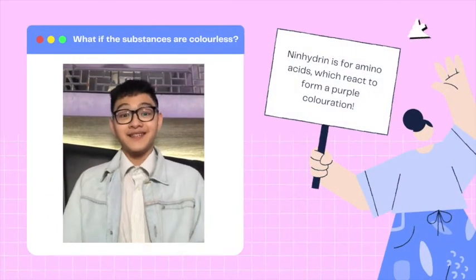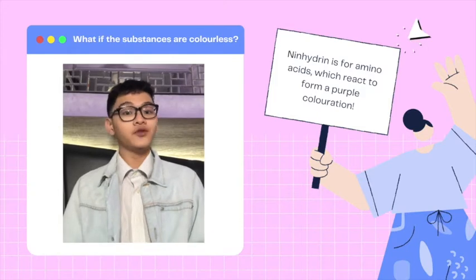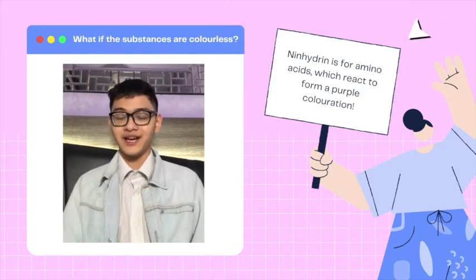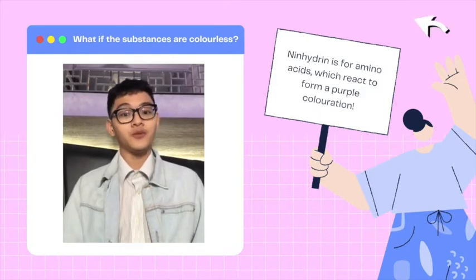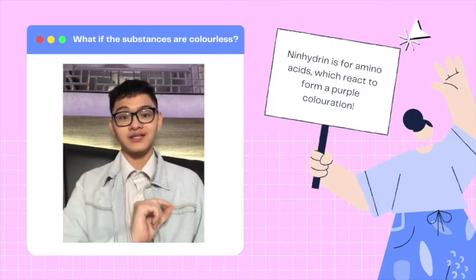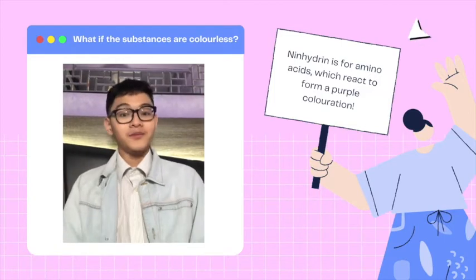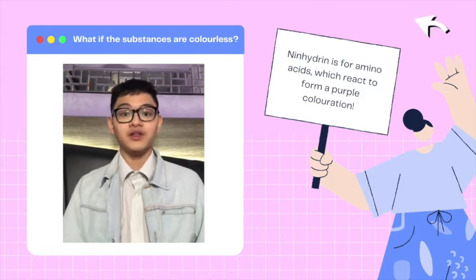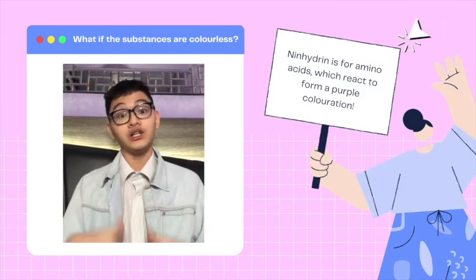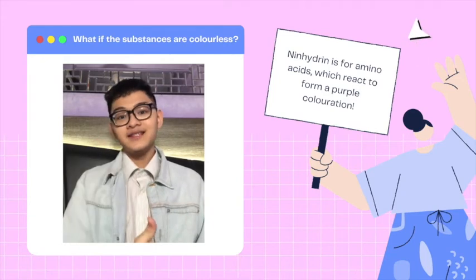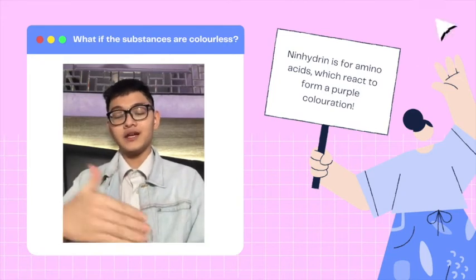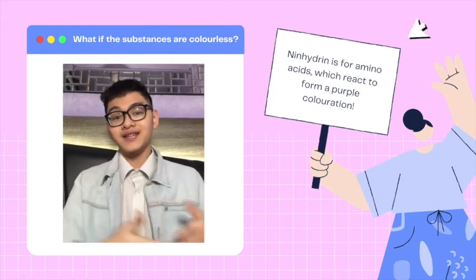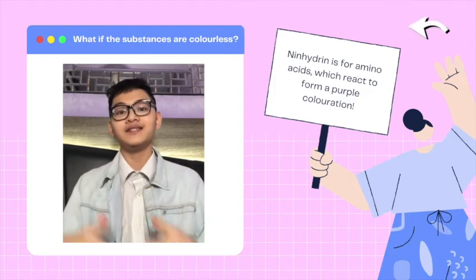If the substances to be tested are colorless and non-fluorescent even under ultraviolet light, then we'll have to treat the chromatogram with some chemicals. For example, for amino acids, we use ninhydrin. Ninhydrin basically reacts with the amino acids to produce a purple coloration. The intensity and the position of the colored spots indicate the type and also the quantity of the constituent amino acids.